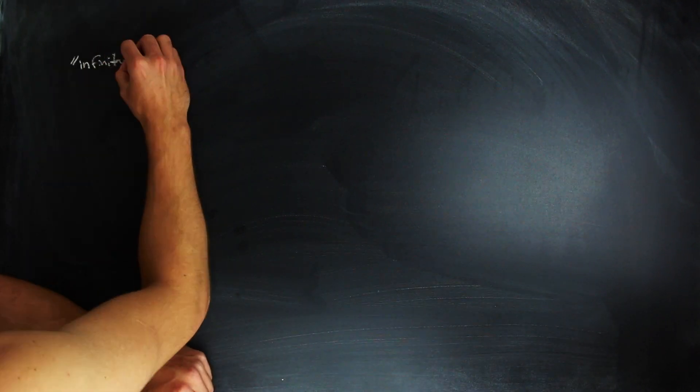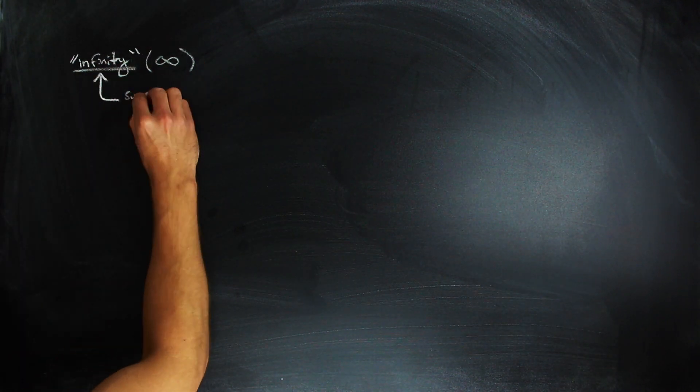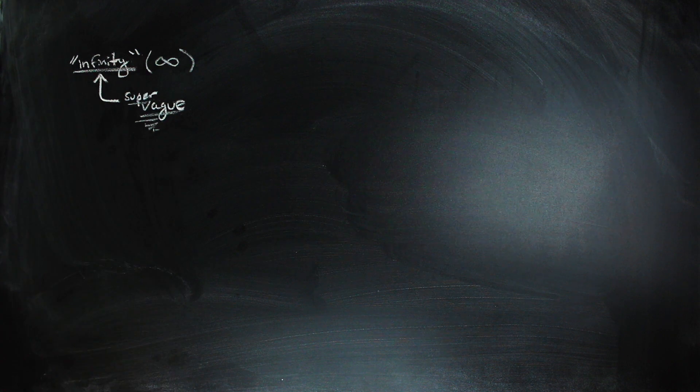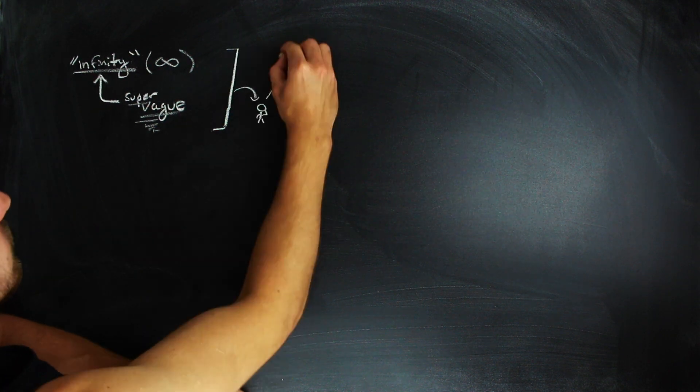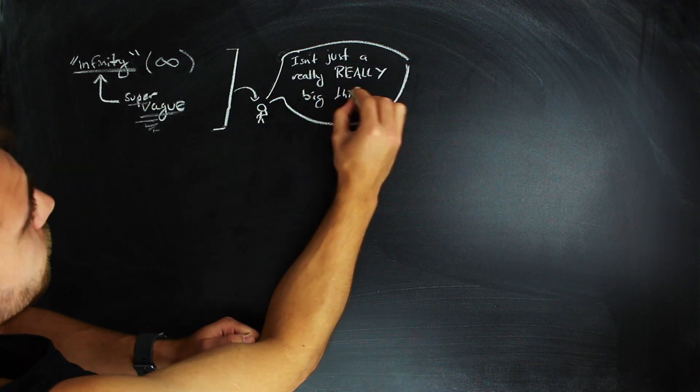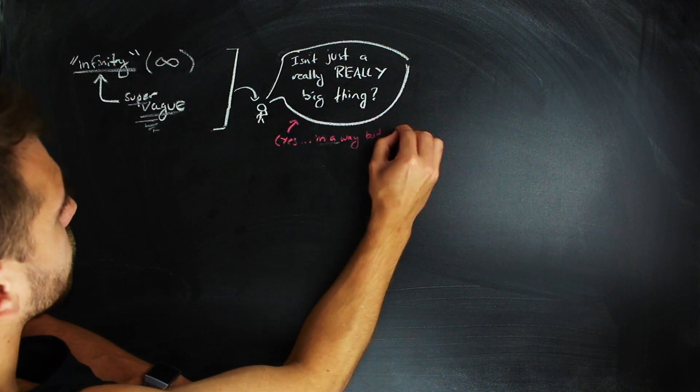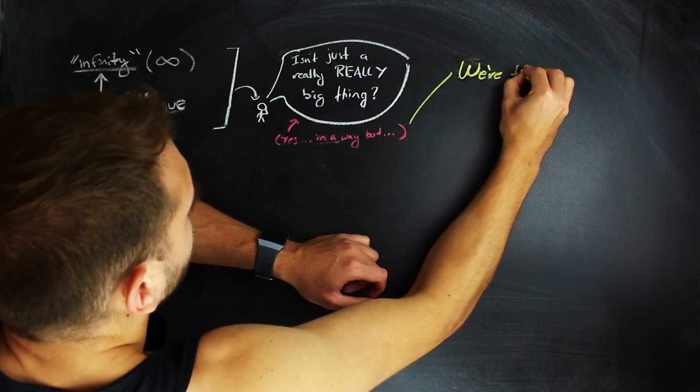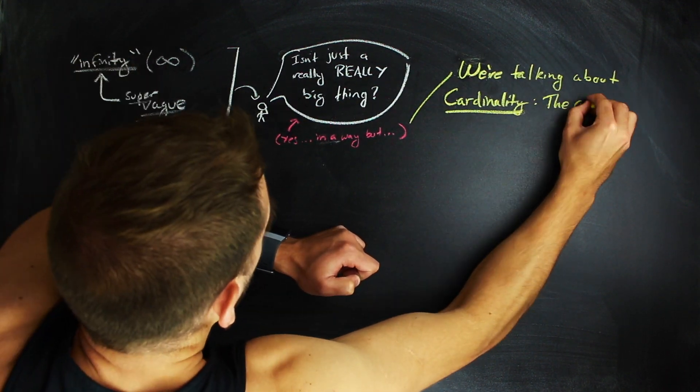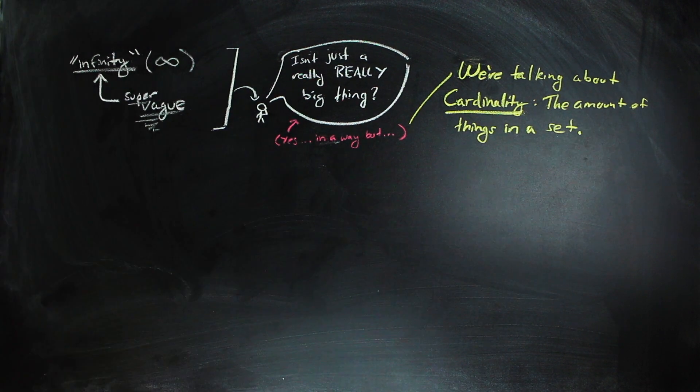Okay, so we're going to talk about infinity in this video. For a mathematician, it can be a really vague term, and for someone who's not that familiar with mathematics, it might just be this really big unattainable number. We're going to be talking about infinity as an amount of things in a set, or a set's cardinality.